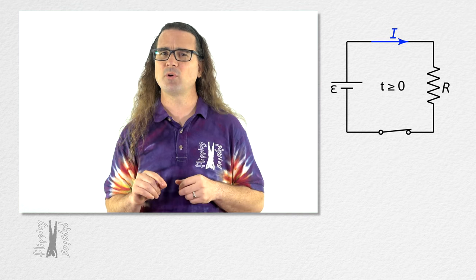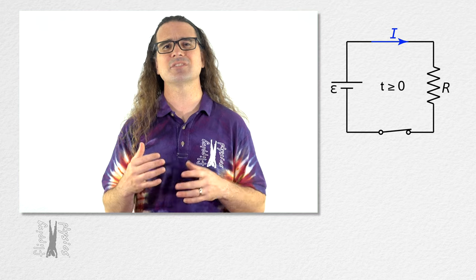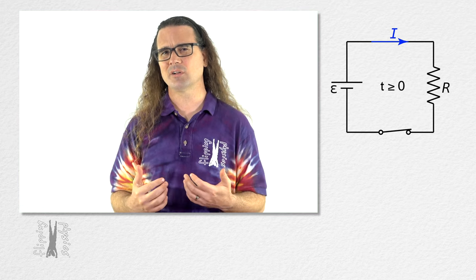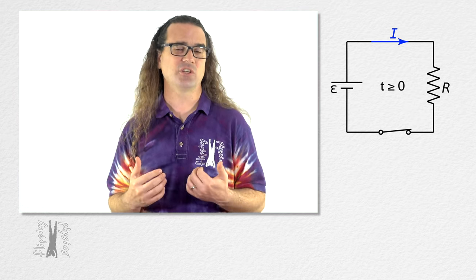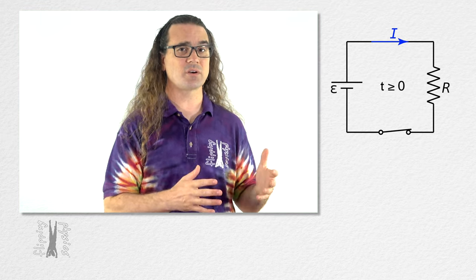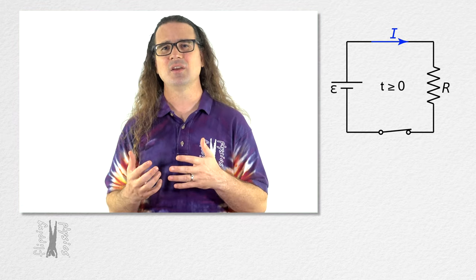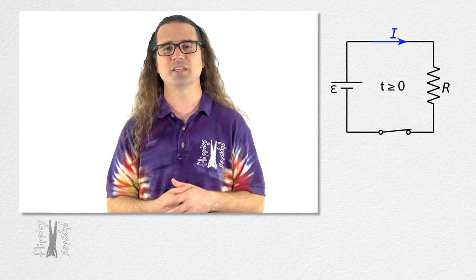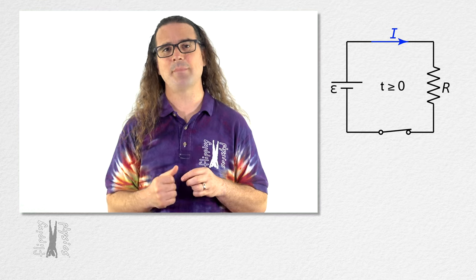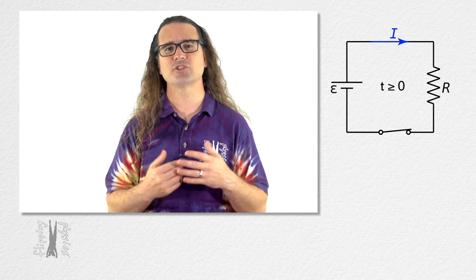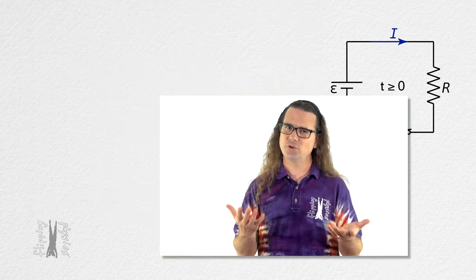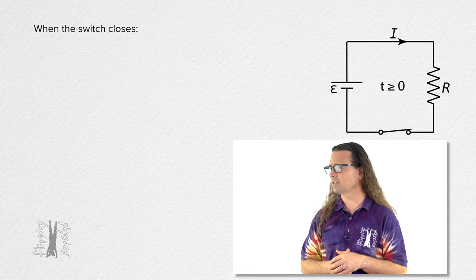Up to this point, we have assumed the current appears instantaneously in the circuit. However, in the real world, nothing changes instantaneously. The current cannot go from zero to i without taking some time. So let's look at what really happens when the switch closes. What do you think happens when the switch closes?